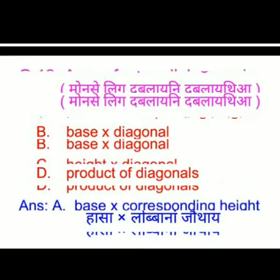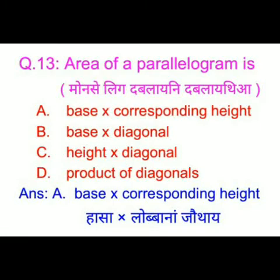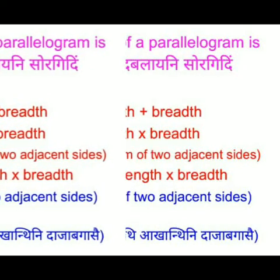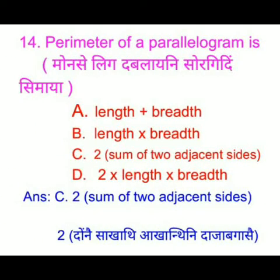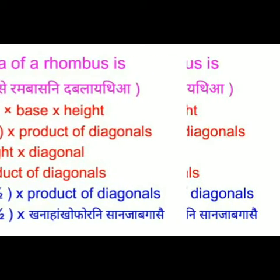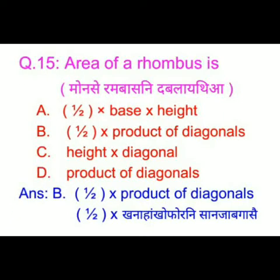The perimeter of a rhombus — we have four options and the right answer is option A: 4 into side. The perimeter of a parallelogram — we have four options and the right answer is option C: 2 into sum of 2 adjacent sides. The area of a rhombus — the right answer is option B: half into product of diagonals.